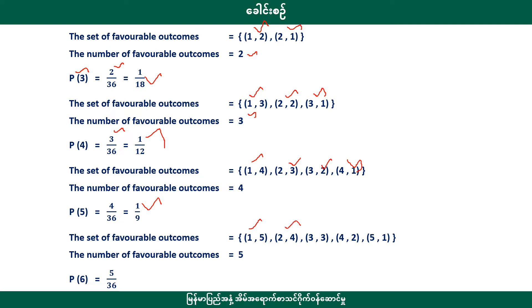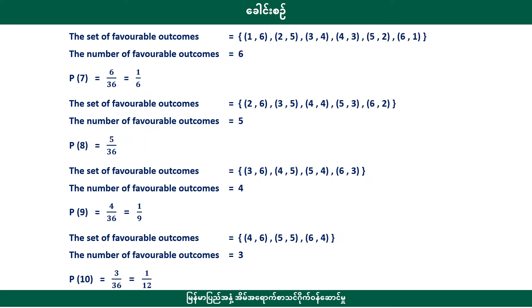Probability of 6 is 5 by 36. Probability of 7 is 6 by 36, or 1 by 6. The combinations are: 1+6, 2+5, 3+4, 4+3, 5+2, 6+1.